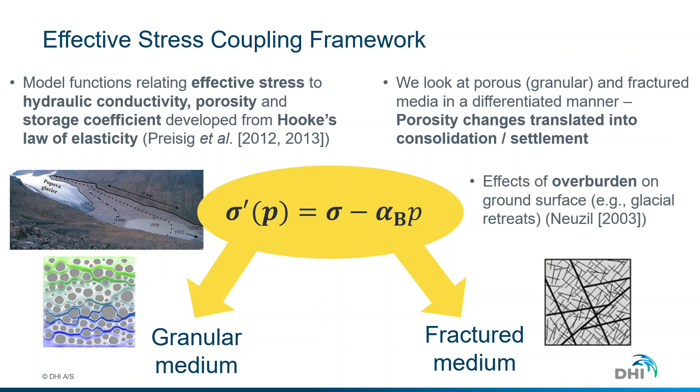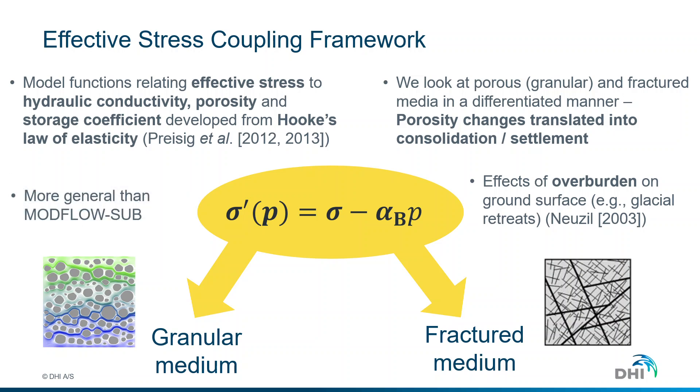On top of that, we could also include effects of overburden on ground surface, for example, glacial retreats, but also the weights of different buildings. Our approach is much more flexible compared to other solutions currently in the market, because we operate and add the effects of stress in multiple hydraulic properties like conductivity, porosity, and storage coefficient, and not just in one single parameter.